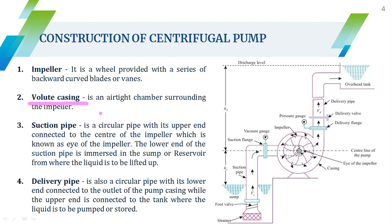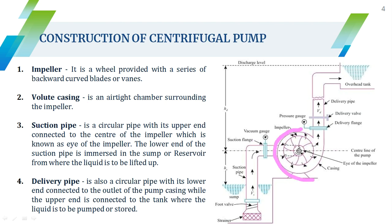The next part is the volute casing, which is an airtight chamber surrounding the impeller. The volute casing has an increasing cross-sectional area — at the beginning the area is small, and it increases as you move forward. Because of this increasing area, the velocity of the water gradually decreases, and when velocity decreases, pressure increases. That is why the volute casing has increasing area.